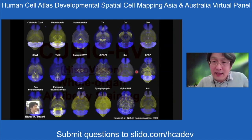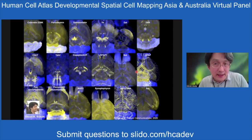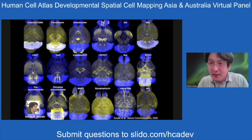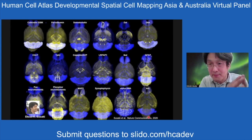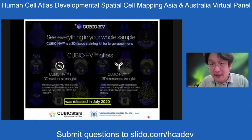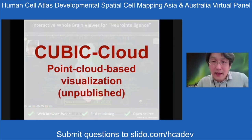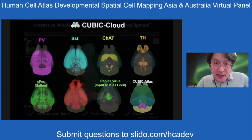To do that, we developed a new tissue staining technique called CUBIC-HP, published in Nature Communications 2020. Using this technique, we can stain any cells, and the kit is commercially available now. After staining, we can analyze data using a cloud-based system.